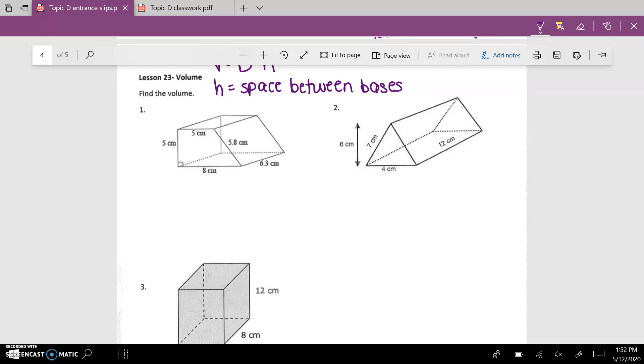Number one, my base is this trapezoid here. To find the volume, I need the area of the trapezoid. So the height, which is 5, then you add the two bases and divide by 2, times the height of the entire shape, which is 6.3.